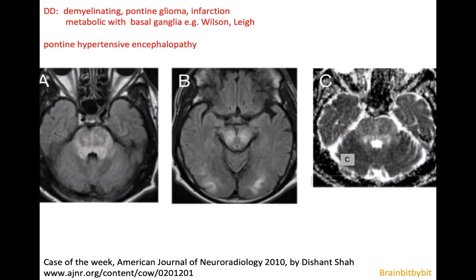In the differential diagnosis from a radiological point of view are pontine glioma, infarction, and other metabolic diseases with involvement of the basal ganglia. Sometimes patients with electrolyte disturbances also have hypertension, so pontine hypertensive encephalopathy — a special subform of PRES — may also be a differential. On imaging, there is involvement of the periphery of the pons in pontine hypertensive encephalopathy.